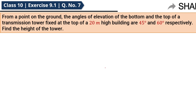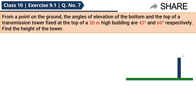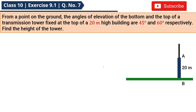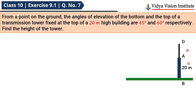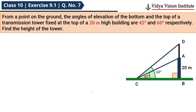तो सबसे पहले हम question को समझ लेते हैं। यहाँ पर एक 20 meter high building है और इस building के top पे एक transmission tower है। AB जो है वो building हो गई और AD transmission tower हो गया। अब ground के किसी point से इस transmission tower के bottom का angle of elevation है 45 degree और top का angle of elevation है 60 degree। तो हमसे इस tower की height पूछ रहा है question।